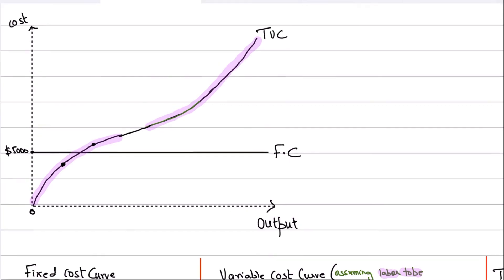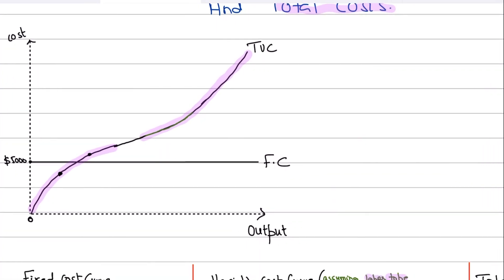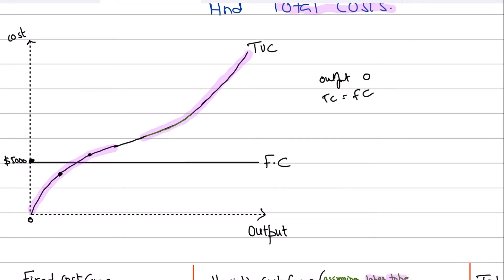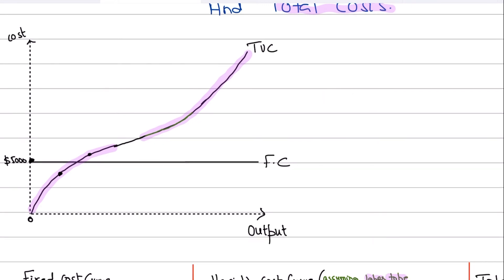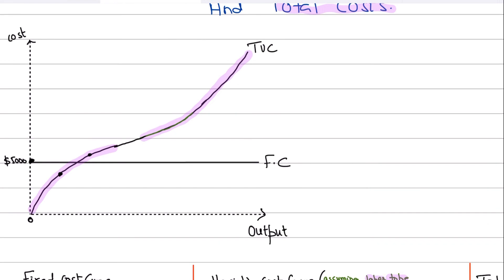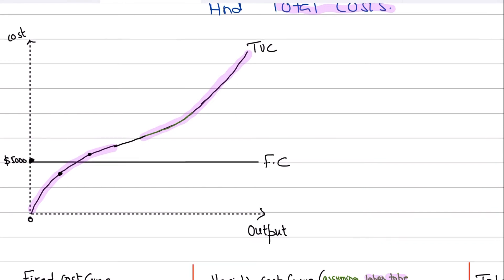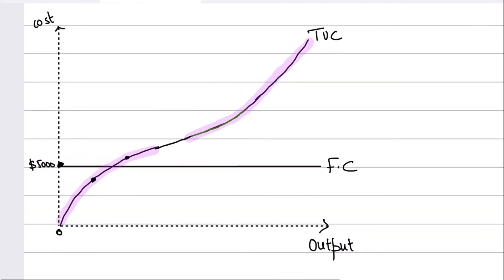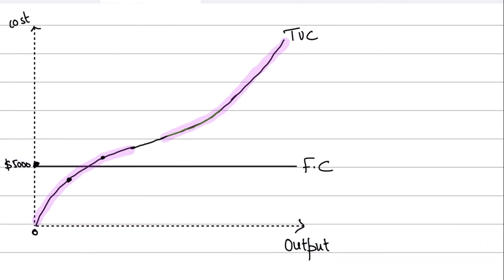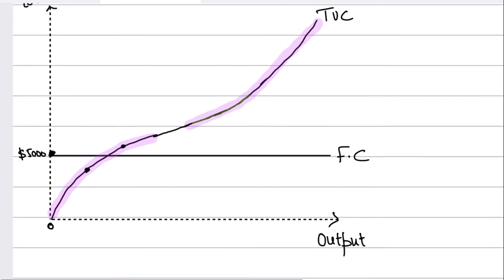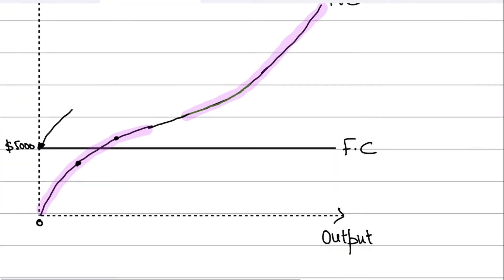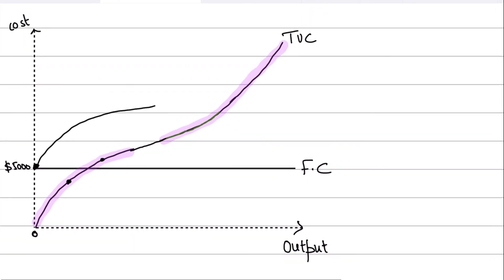To draw the total cost curve: first, understand where to start it. The total cost curve starts from the point where the fixed cost line is — because if output is zero, your total cost equals the fixed cost, since you still pay the fixed cost even if you're not producing anything. Then the total cost curve takes exactly the same shape as the variable cost curve.